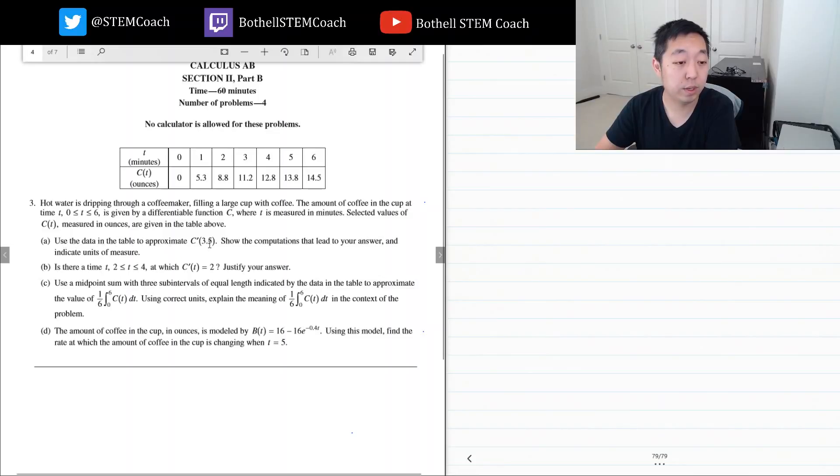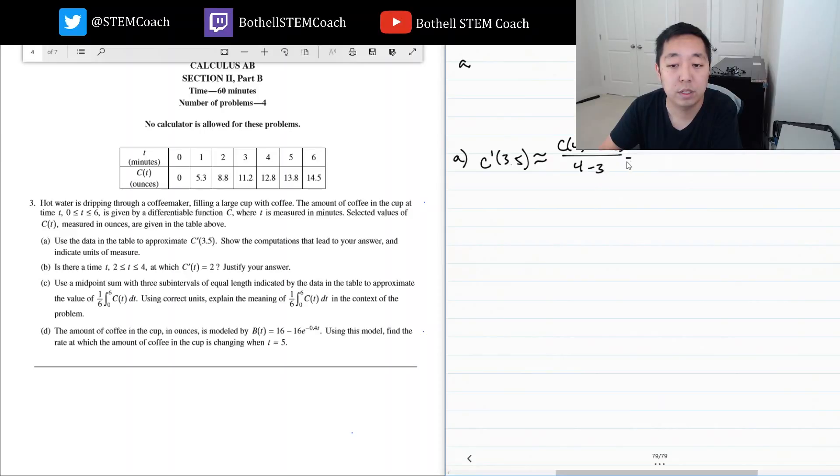Use the data in the table to approximate c prime of 3.5. Show the computations. Okay, so let's do right around here for part a. I'm trying to find a better format to fit everything on the page. c prime of 3.5 is the secant line slope between 3 and 4, so I would say c of 4 minus c of 3 over 4 minus 3. That's equal to 12.8 minus 11.2 over 1.